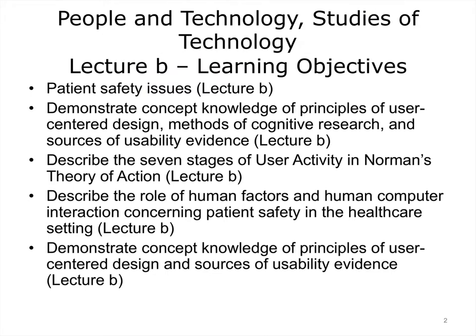To continue the discussion from the previous lecture, in this section we will focus on the following: describe patient safety issues particularly in relation to health technologies; demonstrate concept knowledge of principles of user-centered design, methods of cognitive research, and sources of usability evidence; describe the seven stages of user activity in Norman's theory of action; and describe the role of human factors in human-computer interaction concerning patient safety in the health care setting.